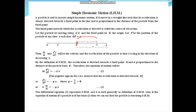Then dx/dt and d²x/dt² are the velocity and acceleration of the particle respectively. By definition, acceleration is always directed towards the fixed point O and is proportional to the distance of the particle from O. So the equation of motion is d²x/dt² = −μx, where μ is a positive constant and the negative sign indicates that the acceleration is directed towards O.